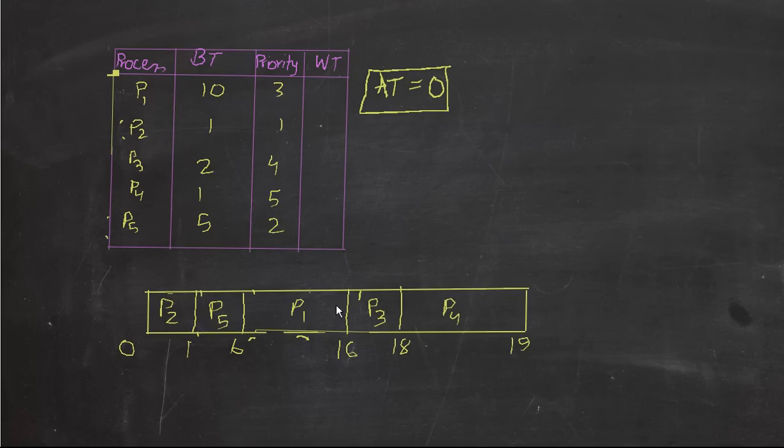Alright, so this is done, this is the Gantt chart that we get, now let's find the waiting time. The waiting time for p1 is, since the arrival time is zero, and the starting time is six, so six minus zero is six, so the waiting time of p1 is six.